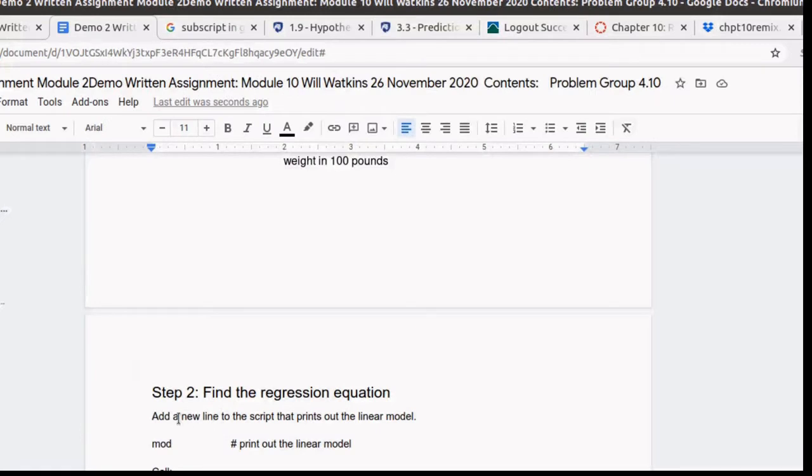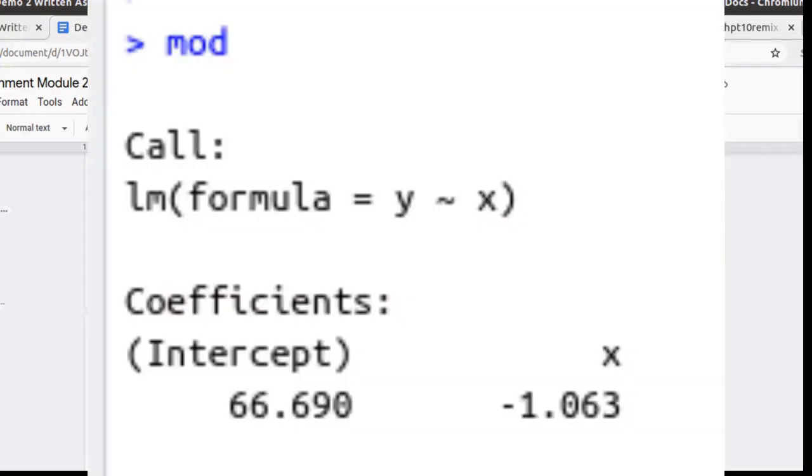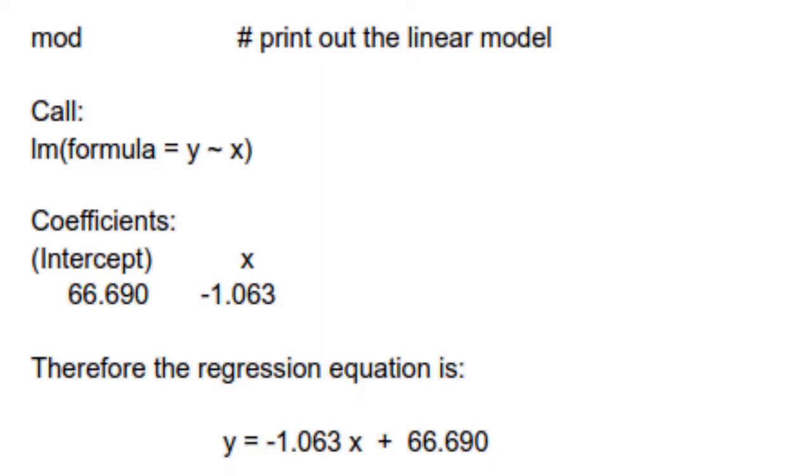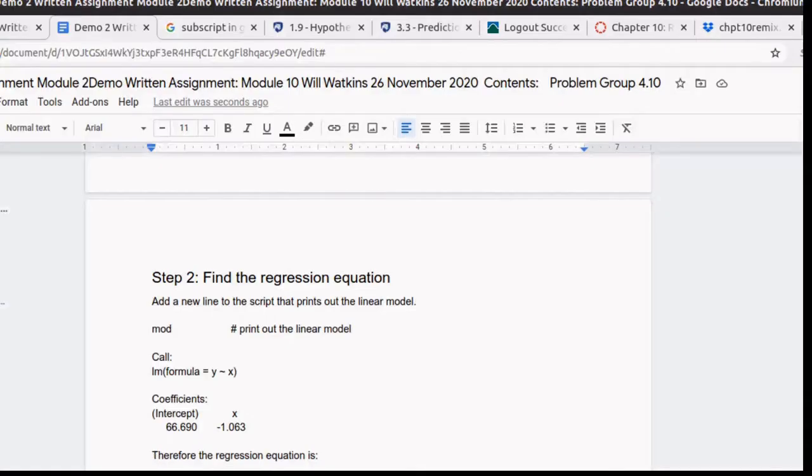So what we've done is told the reader that we're going to add a new line to our script that prints out the linear model. Remember that we had saved the linear model in an object called mod. So when we call mod in our script, then it prints out this result. So there's the y-intercept and there's the slope. Therefore the regression equation is... We've answered step two.